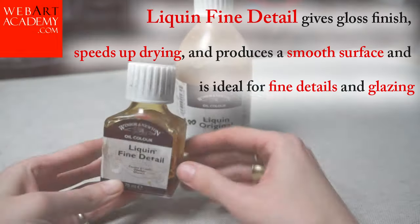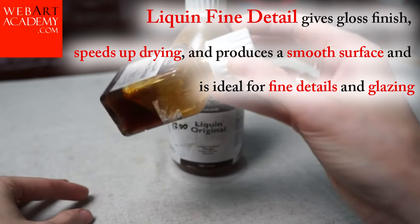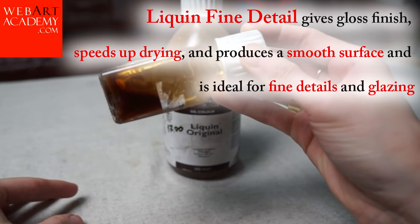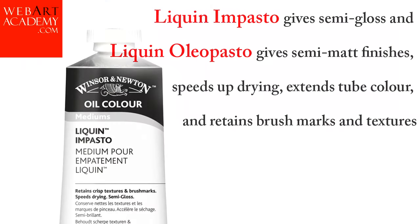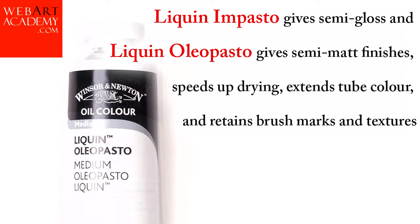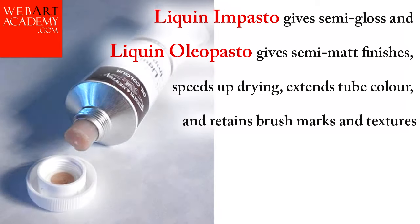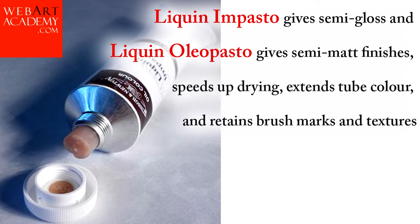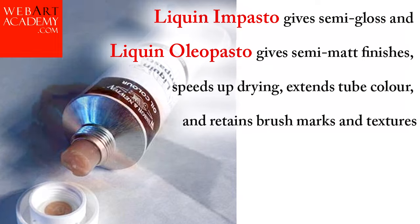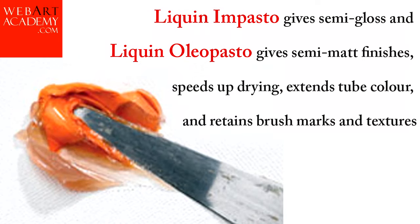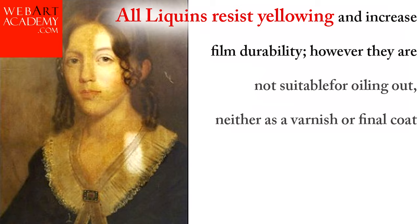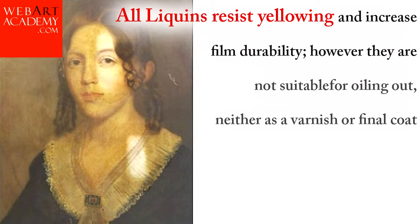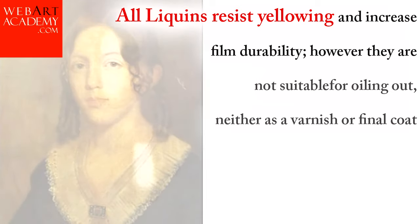Liquin Fine Detail gives a gloss finish, speeds up drying, and produces a smooth surface; it is ideal for fine details and glazing. Liquin Impasto gives a semi-gloss finish, and Liquin Oleopasto gives semi-matte finishes. Both speed up drying, extend tube color, and retain brush marks and textures. All Liquins resist yellowing and increase film durability. However, they are not suitable for oiling out, neither as a varnish or final coat.